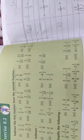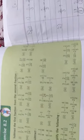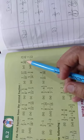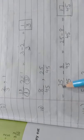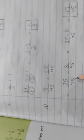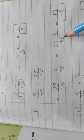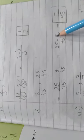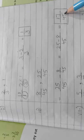For part 6, the fractions are 8/45 and 25/45. These are like fractions, so we write the common denominator 45 and subtract the numerators: 25 minus 8 equals 17. The answer is 17/45.